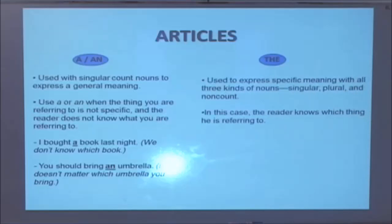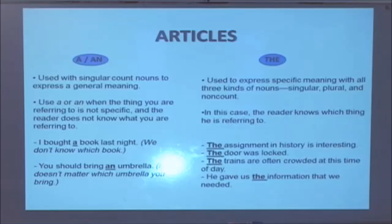Moving on to the usages of the definite article the. The definite article the is used to express a specific meaning with all three kinds of nouns. Namely, singular, plural and non-count. In this case, the reader knows exactly which thing he is referring to. Possible examples, the assignment in history is interesting. The door was locked. The trains are often crowded at this time of day. He gave us the information that we needed.